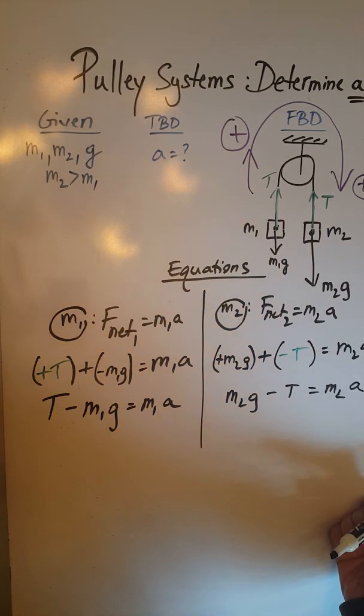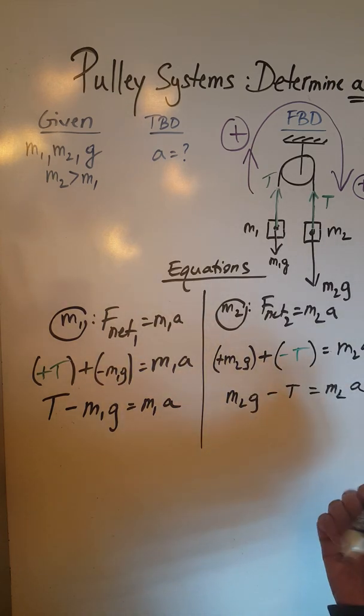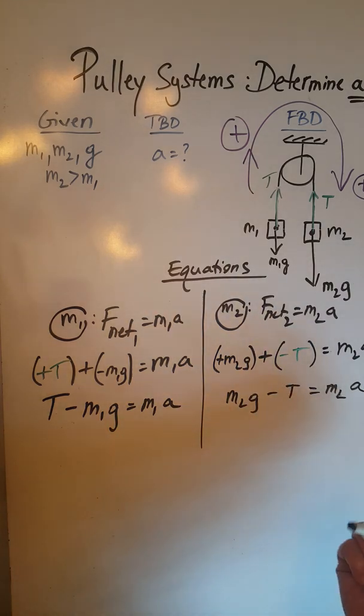What I'm going to do over here to solve the system, I'm going to add up the two equations, left hand sides and right hand sides, and that way tension will actually be eliminated and I'll be able to solve for A.